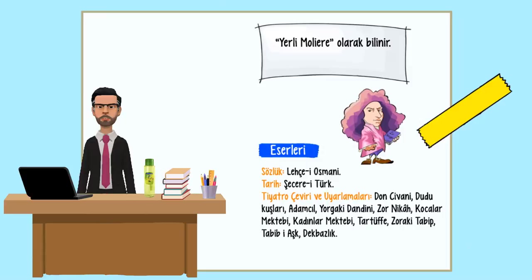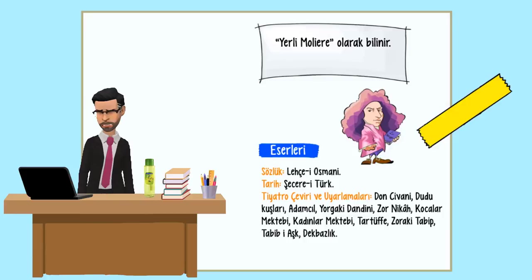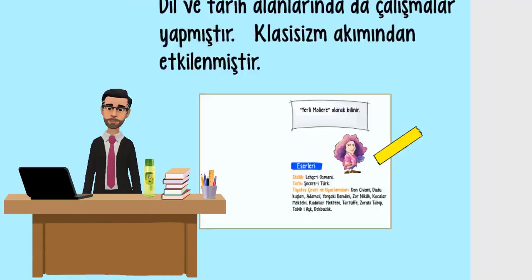Ahmet Vefik Paşa'nın eserleri — Sözlük: Lehçe-i Osmani. Tarih: Şecere-i Türk. Tiyatro (Çeviri ve Uyarlamaları): Doncivani, Dudu Kuşları, Adamcıl, Yorga Gidendini, Zor Nikah, Kocalar Mektebi, Kadınlar Mektebi, Tartuffe, Zoraki Tabip, Tabib-i Aşk, Dekbazlık.